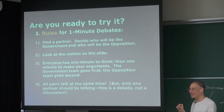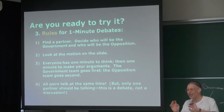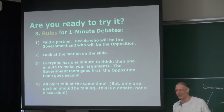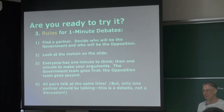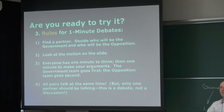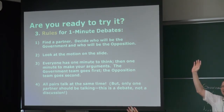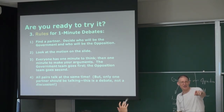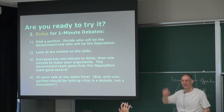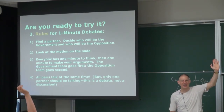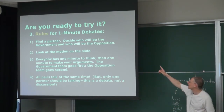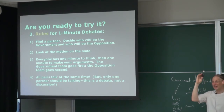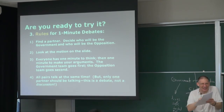Everybody has a partner except people doing the demonstration debate — those folks can go now to prepare. Did you decide who's government and who's opposition? If you're government, raise your hand. If you're opposition, raise your hand. Good — looks like there's one opposition member in each pair. We're done with step one. Step two: I'm going to show you a motion on a slide. You have one minute to think and write some notes, then government stands up and gives a one-minute speech, then opposition stands up and gives a one-minute speech.